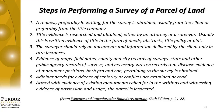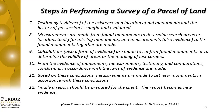Step four: evidence of maps, field notes, county and city records of surveys, state and other public agency records of surveys, and necessary written records that disclose evidence of monument positions, both pro and con, pertaining to the survey are obtained. Five: adjoiner deeds for evidence of seniority or conflicts are examined. Six: armed with evidence of existing monuments called for in the writings and witnessing evidence of possession and usage, the parcel is inspected. Seven: testimony or evidence of the existence and location of old monuments and the history of possession is sought and evaluated. Eight: measurements are made from found monuments to determine search areas or locations to dig for missing monuments. Nine: calculations — which are also a form of evidence — are made to confirm found monuments or determine the validity of areas or the marking of lost corners.